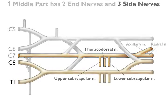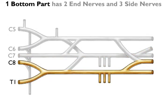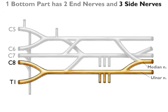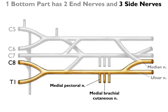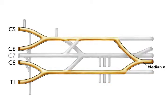And for the bottom part of the plexus: 1 bottom part, 2 end nerves — the median nerve and the ulnar nerve. 3 side nerves: the medial pectoral nerve, the medial brachial cutaneous nerve, and the medial antebrachial cutaneous nerve. Notice that the median nerve is an end nerve for both the top part of the plexus and the bottom part of the plexus.